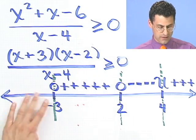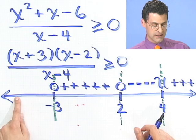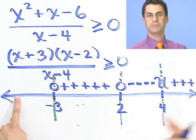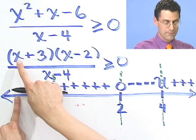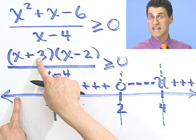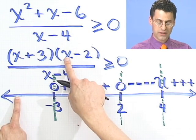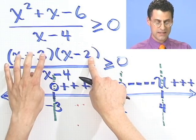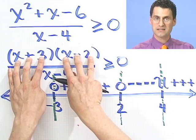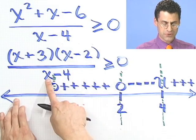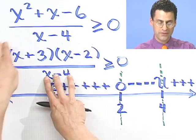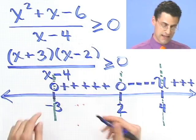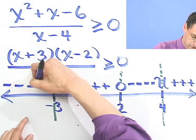And then what happens out here? Well, now we can pick anything we want. Let's pick negative a trillion. Just to really drive this home. Negative a trillion plus 3, negative. Negative a trillion minus 2, very negative. So I've got negative times a negative. That's a positive. Then if I take a negative a trillion and subtract 4, I get something else that's negative. So now I have a positive divided by a negative. That's negative. So in fact, I see negative regions all here.